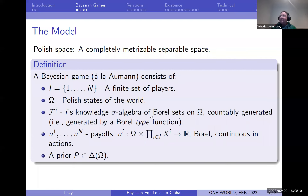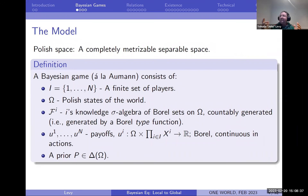We assume everyone has a knowledge sigma-algebra, which is generated by a Borel function — countably generated. Each player has a function from states of the world to some type space, and he can't differentiate between states that map to the same type. The sigma-algebra has the interpretation that he can't differentiate between two states if any measurable set containing one also contains the other. We have payoffs assigned to each state of the world and each action profile.